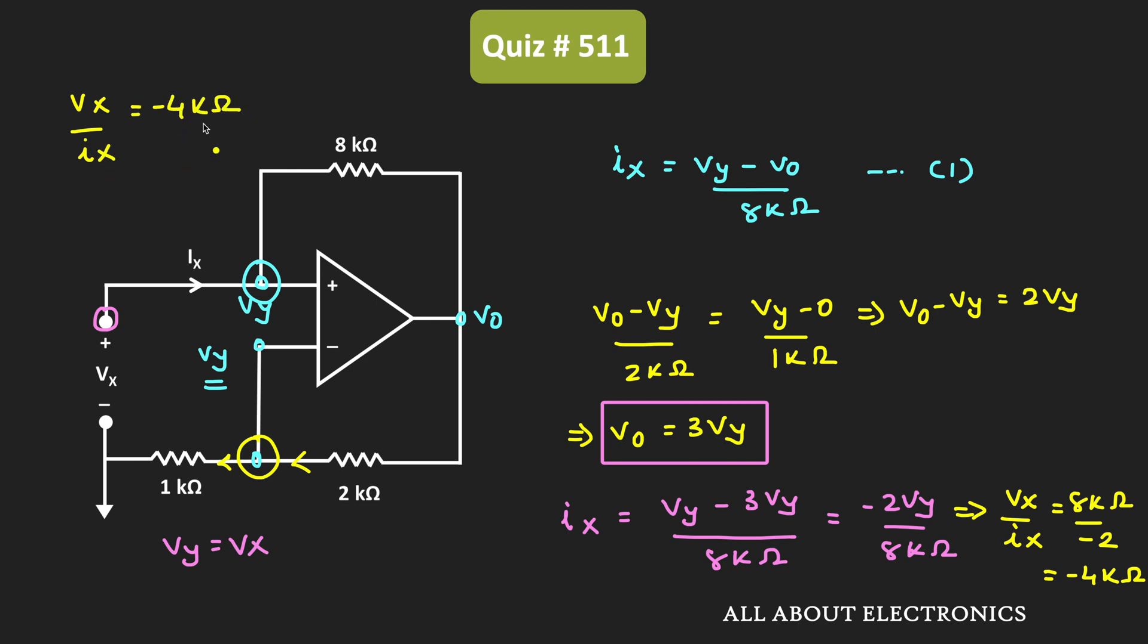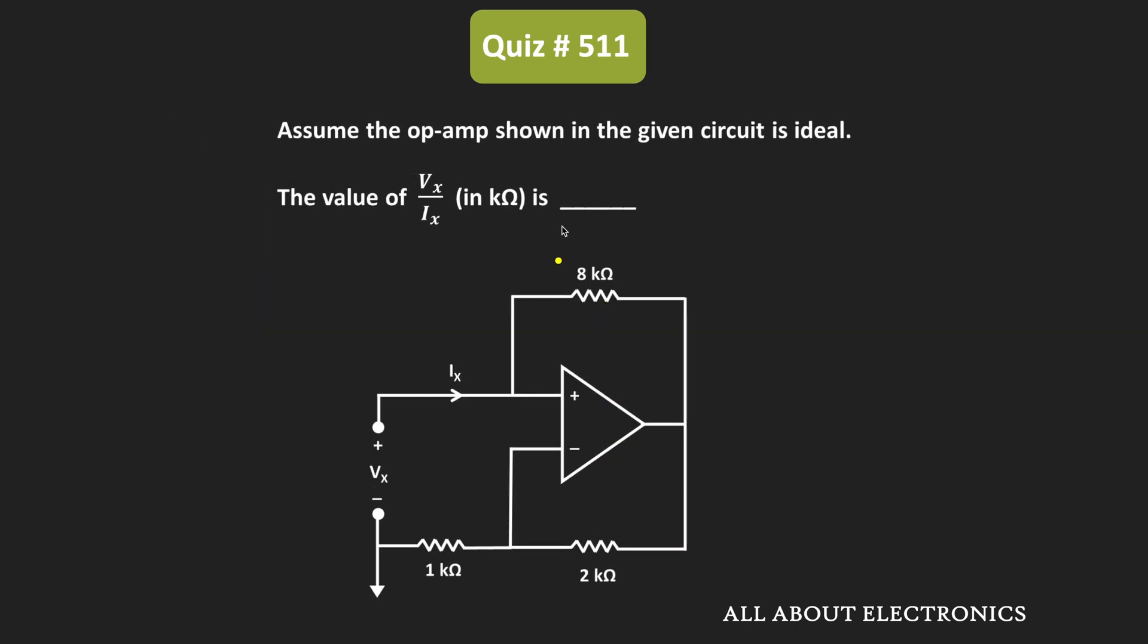So here the negative value indicates that the direction of the current is reverse. That means here this current Ix is actually flowing in the opposite direction. And that is why here we are getting the negative sign. So from this we can say that for the given question, the answer is equal to minus 4.